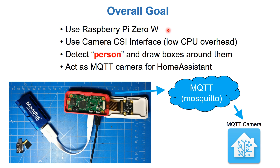The overall goal today is to use a Raspberry Pi Zero W for wireless communication and a camera interface to detect a person and draw boxes around them, giving you a video stream that can detect a person. The idea is to use this Pi connected to a camera via the CSI interface, an OTG cable connecting to Movidius's neural compute stick, and every time it sees a person it draws a box and sends an image to an MQTT server.